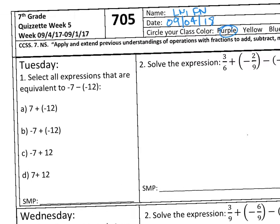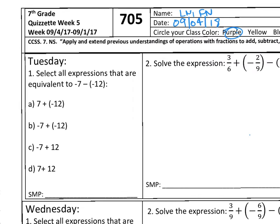Number one on each day is going to require some work on your part. The easiest way to do this one is to solve each expression. So solve A, solve B, solve C, and solve D, and then read the instructions. It says, select all expressions that are equivalent to negative 7 minus negative 12. Remember that the word equivalent is just a fancy word for the word equals. So let's read that question one more time.